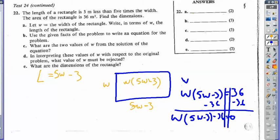But wait a second. In order to factor this, I need to expand it and then put it back together and then factor it with this negative 36. So I'm left with 5w² minus 3w minus 36, and that's all equal to zero.